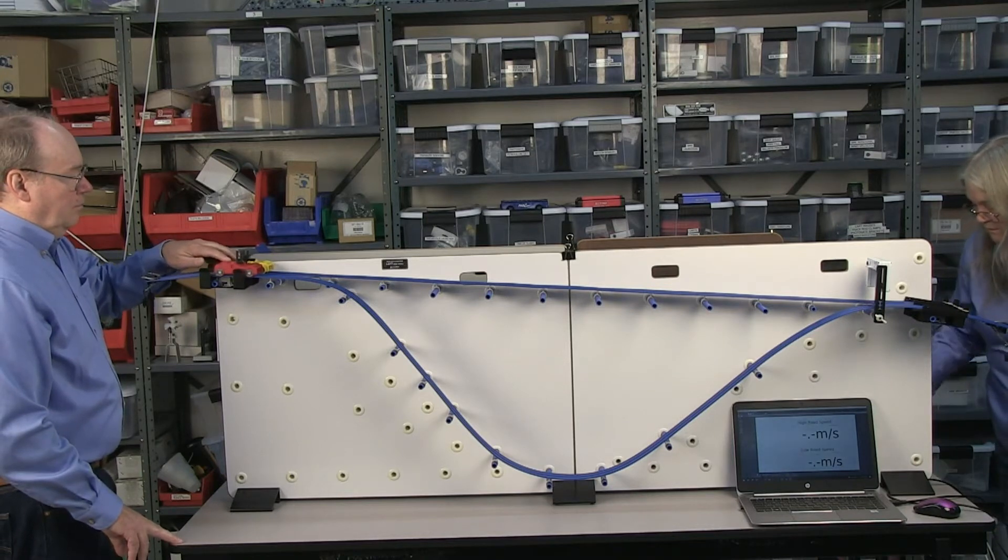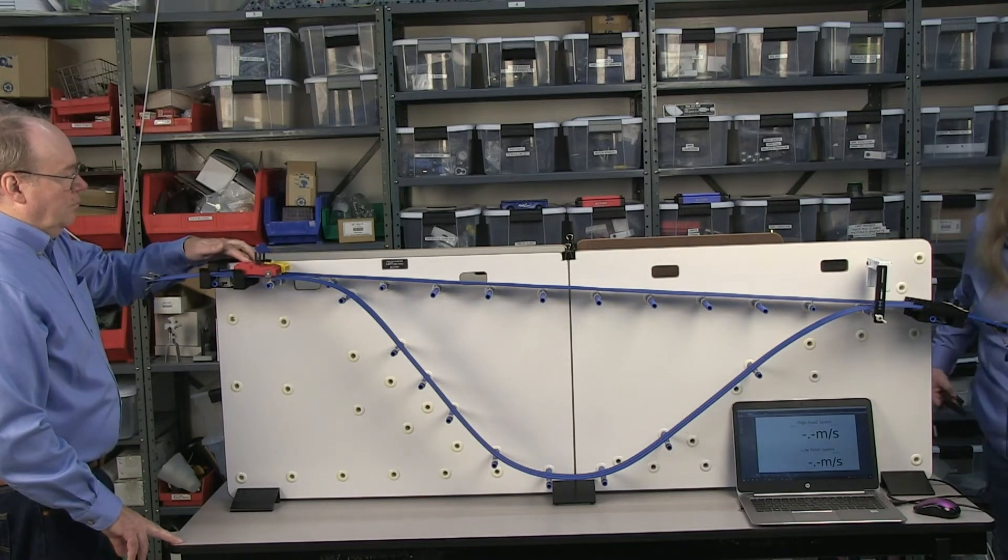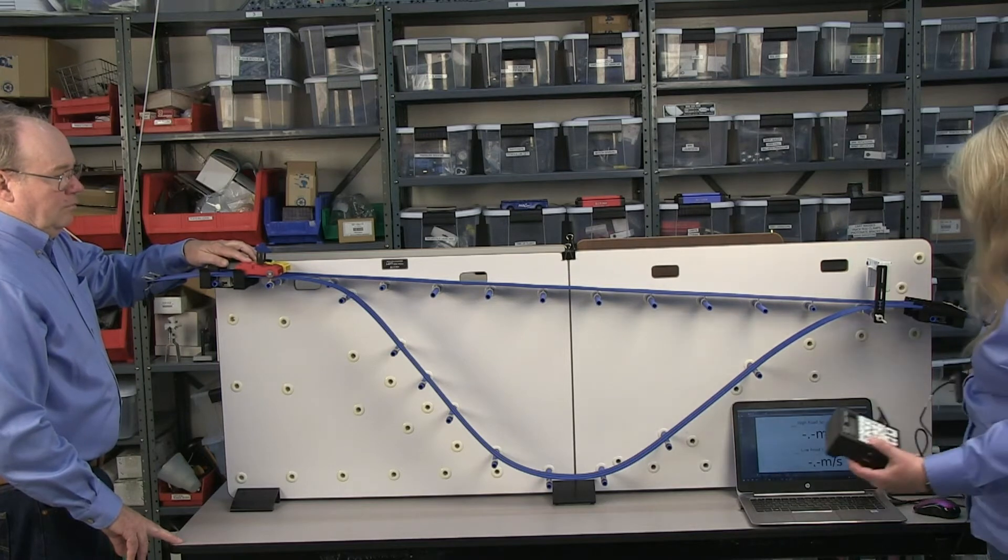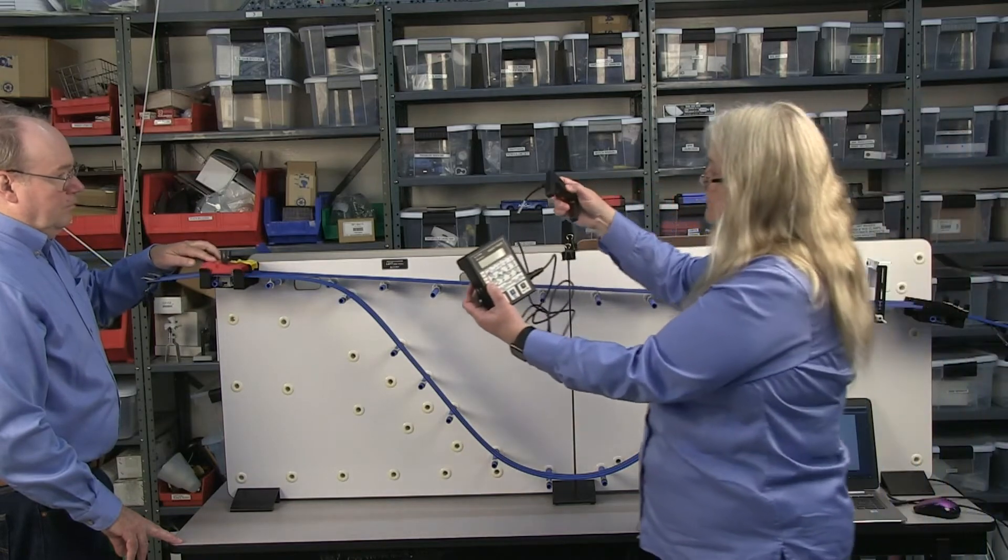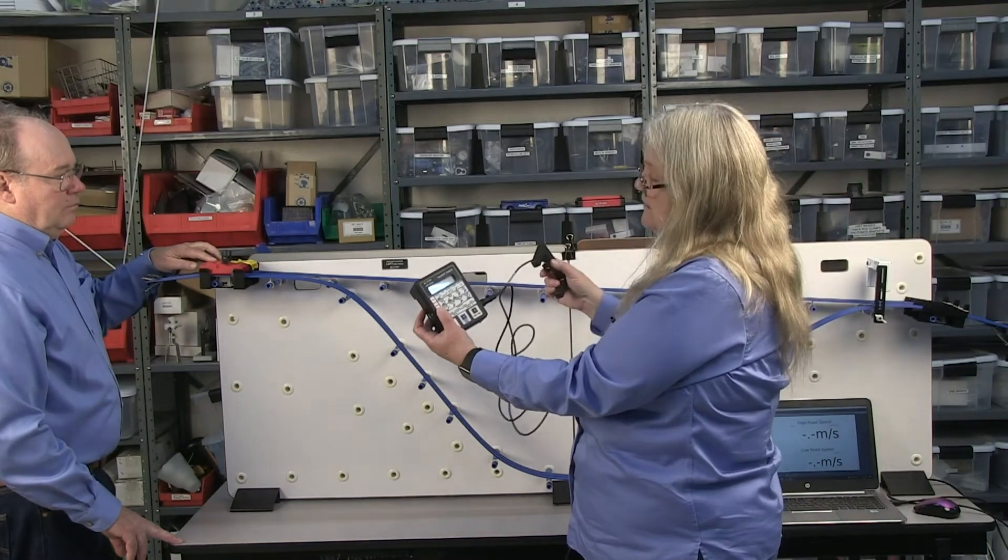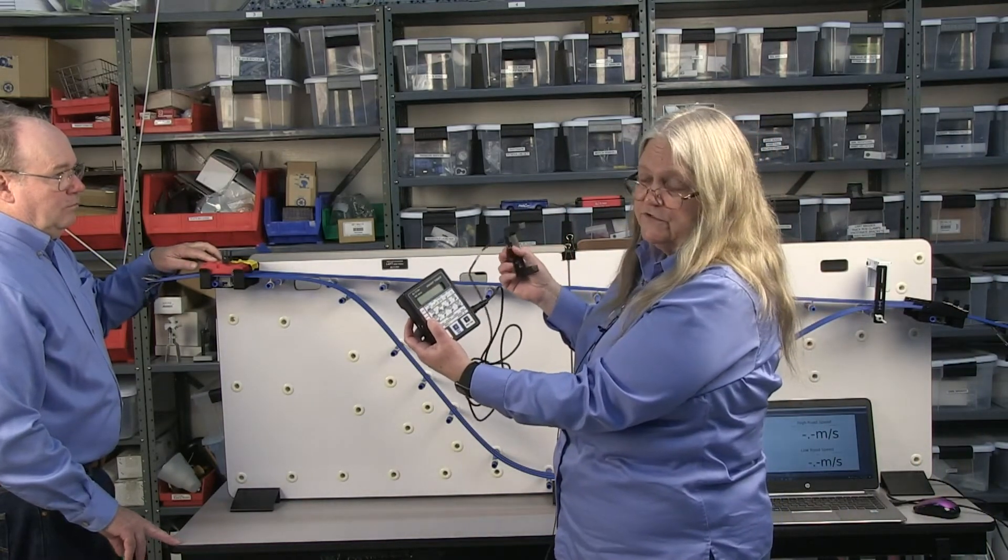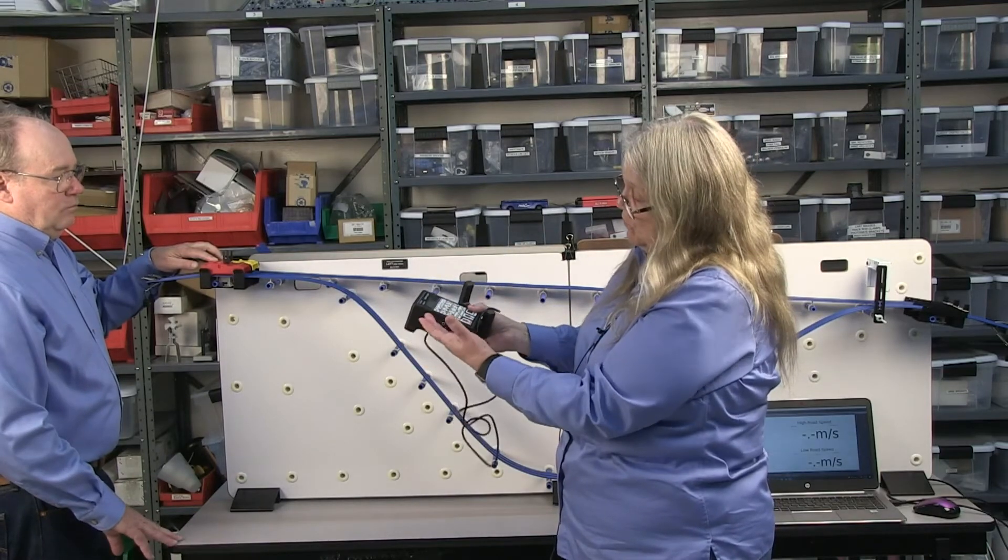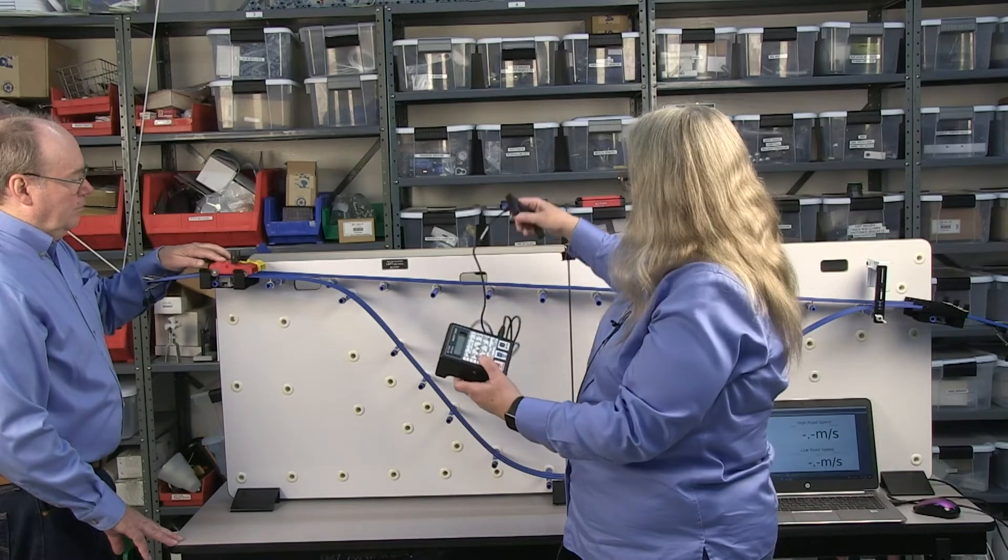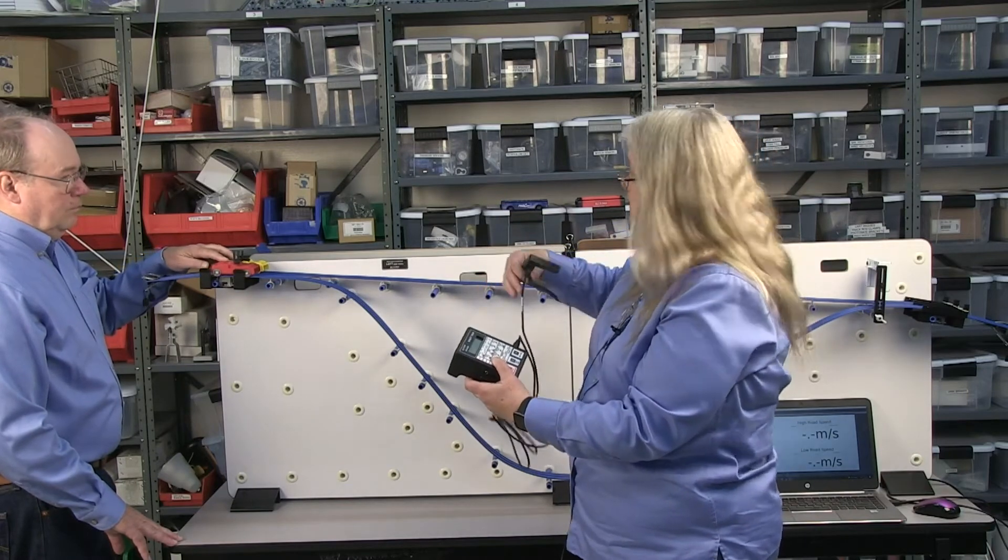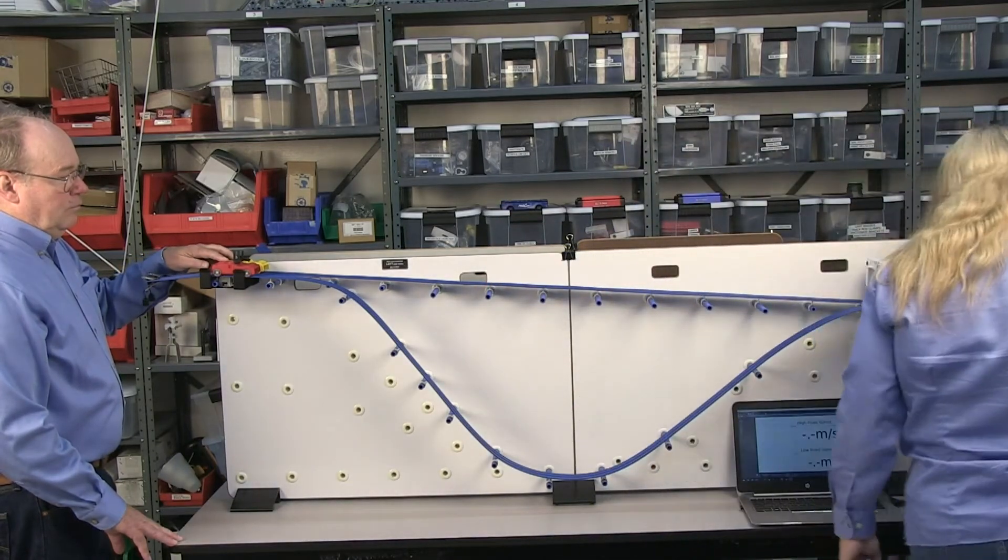And another way of doing this is using a smart timer with a regular photo gate and this is very convenient for the students because it's portable. It doesn't need to be plugged in and it gives you the speeds as well. So that's a different way of doing it.